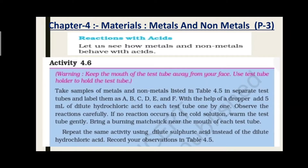इसके बारे में हमने Basic of Chemistry वाले video में discussion किया है। Reaction with Acids की बात करें तो जो भी metals और non-metals हैं वो acids के साथ कैसा react करते हैं, किस type का reaction देते हैं। यहाँ पर activity के form में दिया हुआ है। आपको separate test tubes A, B, C, D, E और F में samples रखने हैं और label लगाने हैं। फिर dropper की help से 5 ml dilute Hydrochloric Acid test tube में लेना है और उसमें add करना है। जो भी reactions होते हैं वो notice करना है - कौनसा solution cold है और कौनसा hot है।